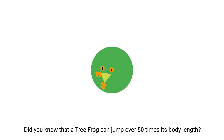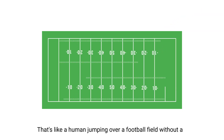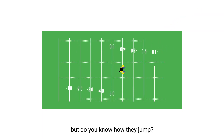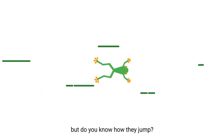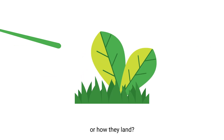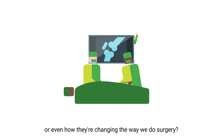Did you know that a tree frog can jump over 50 times its body length? That's like a human jumping over a football field without a running start. But do you know how they jump? Or how they land? Or even how they're changing the way we do surgery?